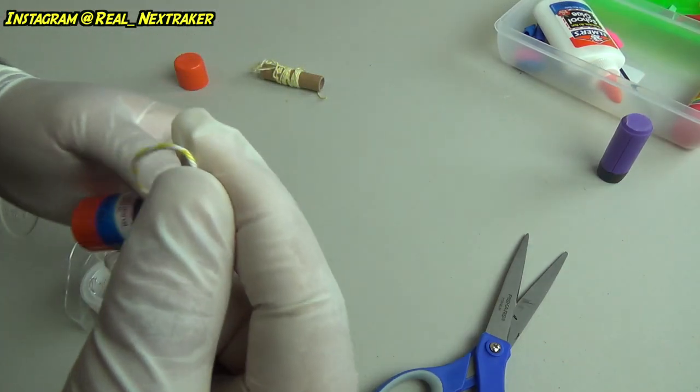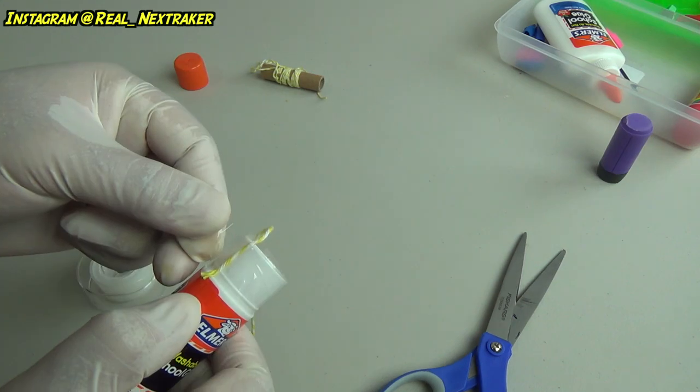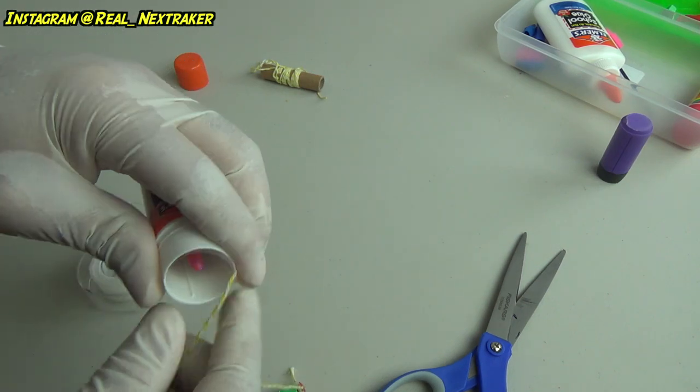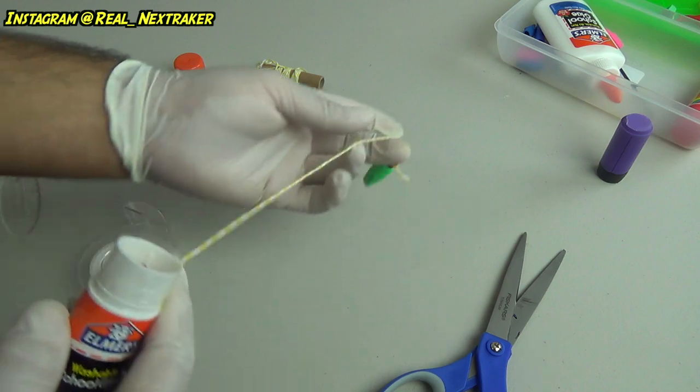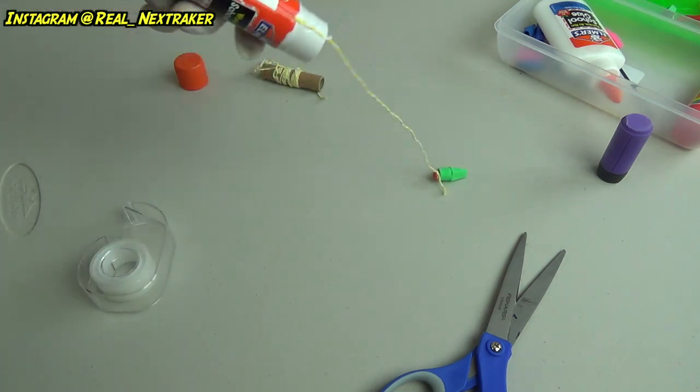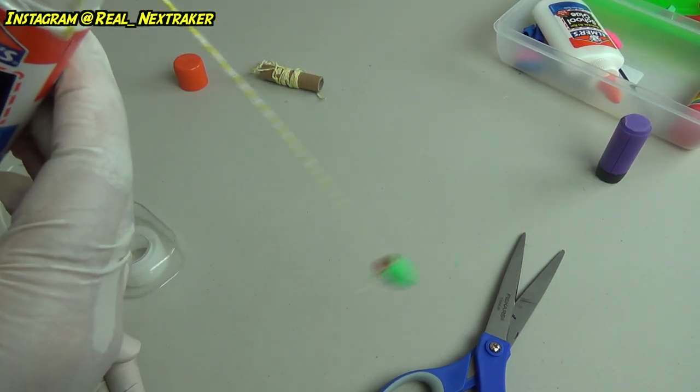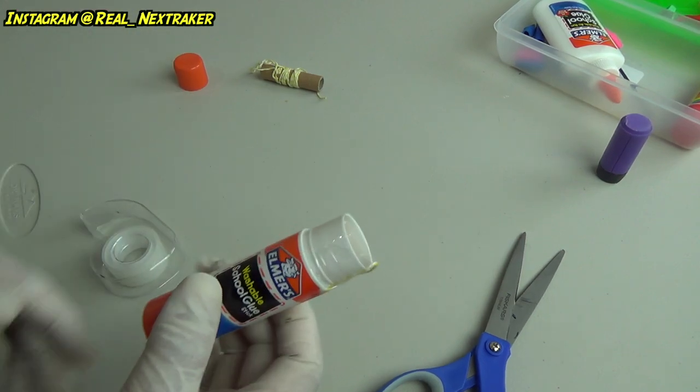The other end of the string we are gonna tape on to the outside edge of the glue stick container like so. Now, if you guys don't have any string available, you can cut up some rubber bands and join them together to make one. Alright, at this point our toy has been completed and now it's time to have some fun.